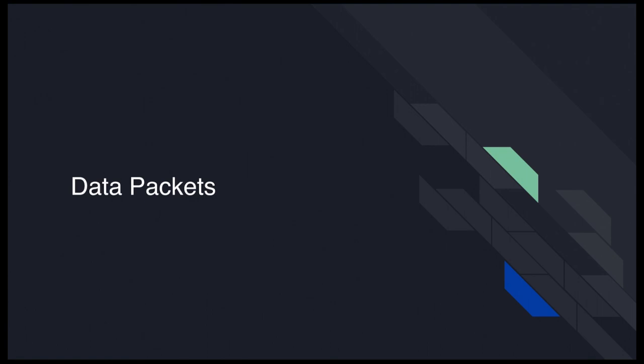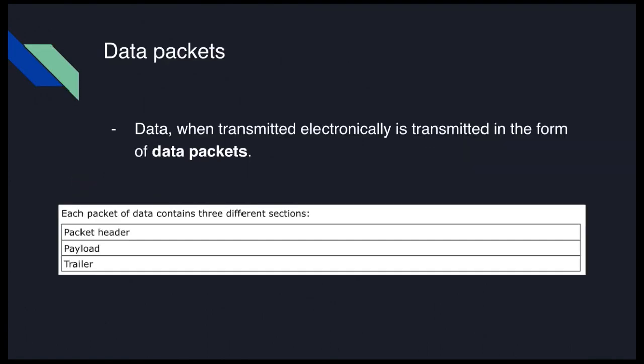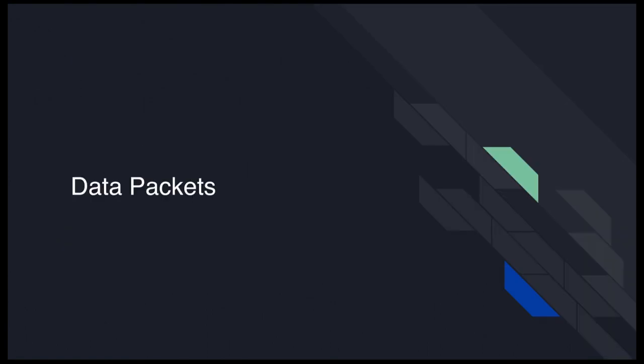The first thing we're going to talk about is data packets. Data packets specifically are the unit of data that is transferred over the internet. So when any data is transferred to a network, to different computers, or over the internet, it's in the form of data packets. We'll talk about data packets, then go back to more general data transmission.